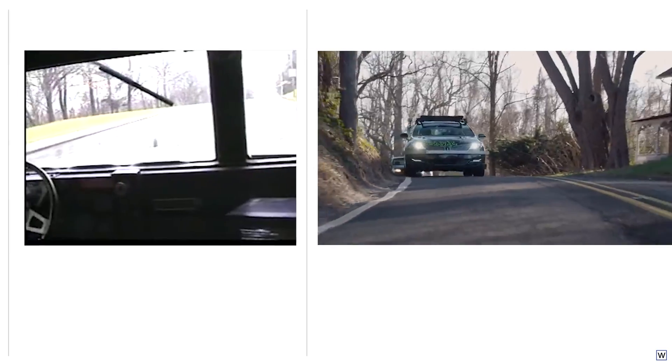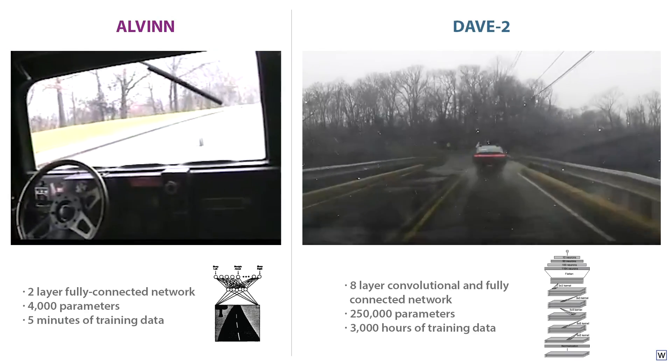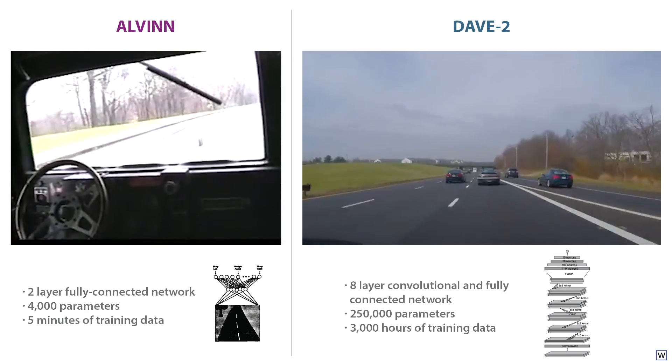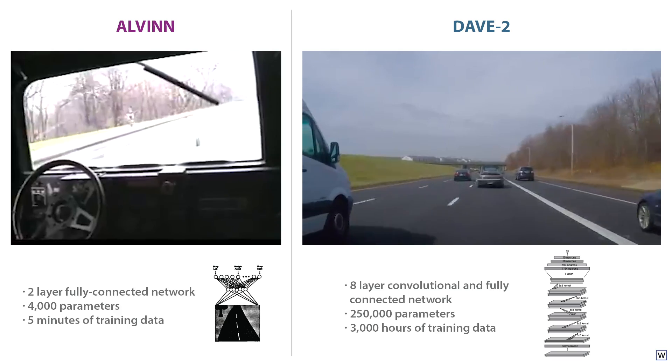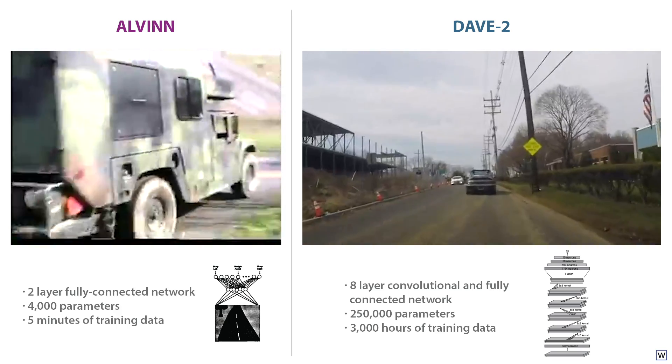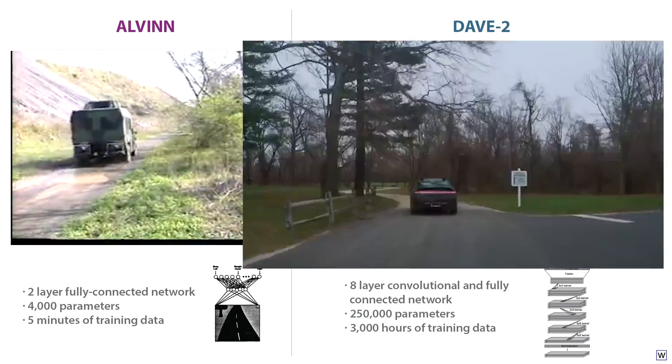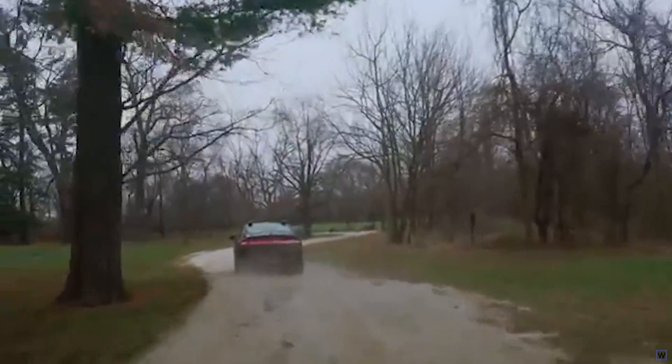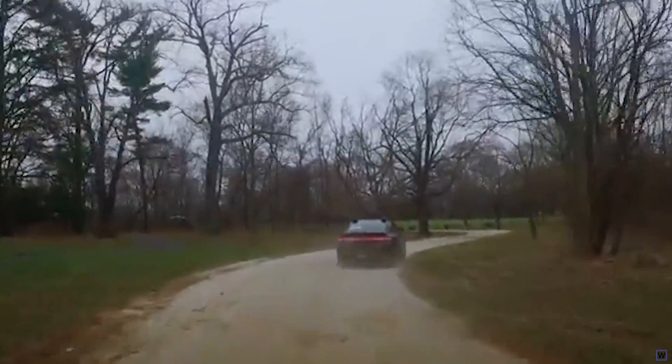And more recently, in 2016, researchers at graphics card manufacturer Nvidia trained a modern implementation of Pomerleau's approach using a deep neural network and significantly more data than Dean was able to use. The Nvidia network performs quite well, successfully navigating a wide variety of complex environments.